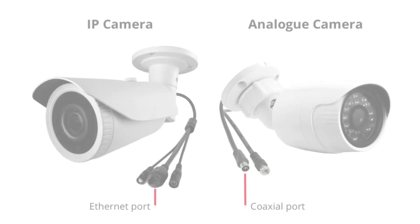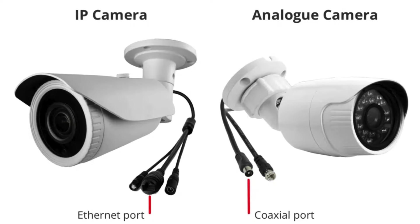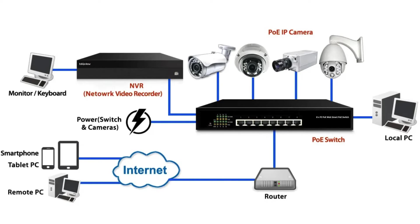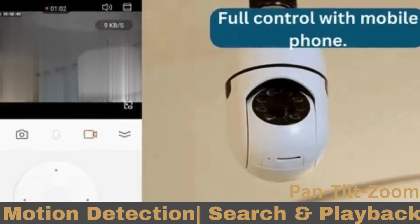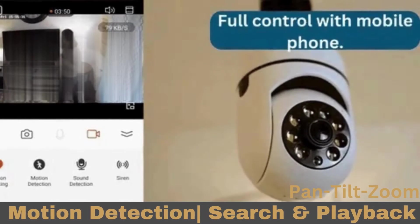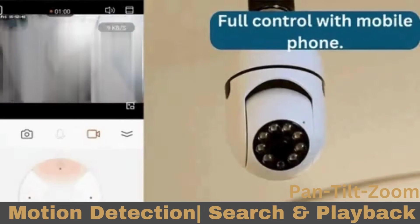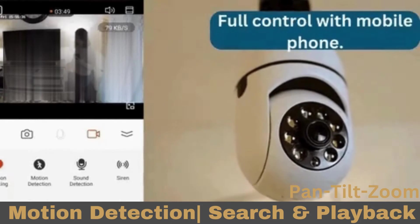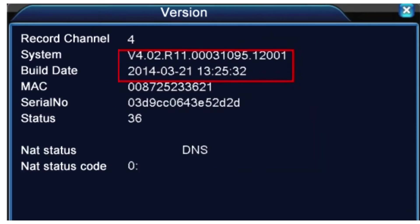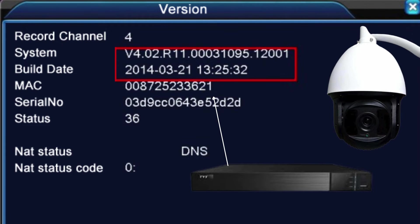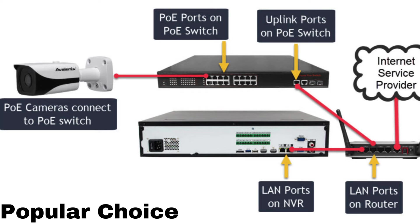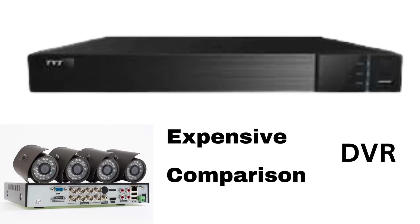NVRs also support high-resolution IP cameras, offering better video quality compared to analog cameras. NVRs also provide good scalability — you can add or remove IP cameras without significant hardware changes. Other features include remote access, motion detection, search and playback options to review specific events or time periods, PTZ (Pan, Tilt, Zoom) control for controlling cameras remotely for a wider surveillance range, and the ability to receive firmware updates for enhanced security. These features make NVR a popular choice for modern surveillance systems, though NVRs are a bit costlier than DVRs.